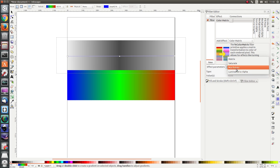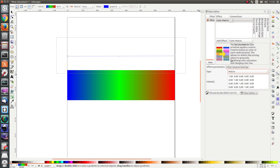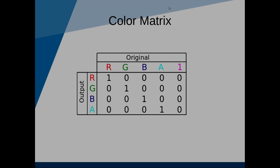Next let's talk about matrix. I've created a small presentation to explain how the color matrix works. Basically, the color matrix can be interpreted as a table. Remember from the previous lesson that a matrix is just a series of numbers arranged in rows and columns.